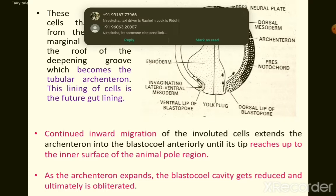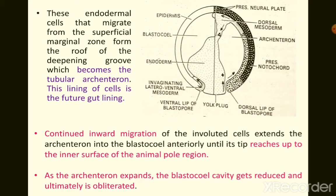Endodermal cells migrating from the superficial marginal zone form the roof of the deepening groove, which becomes the tubular archenteron — the future gut lining. The continued inward migration of involuted cells extends the archenteron anteriorly into the blastocele until its tip reaches the inner surface of the animal pole region. As the archenteron expands, the blastocele cavity gets reduced and ultimately obliterated.